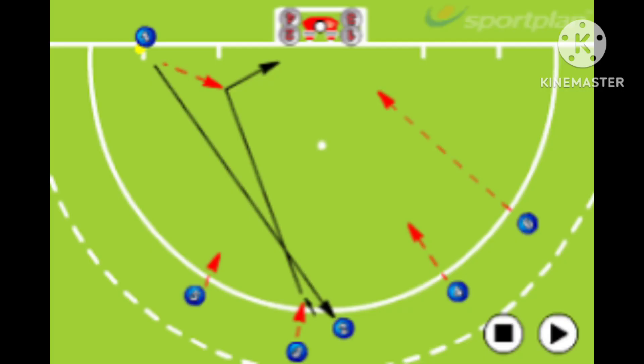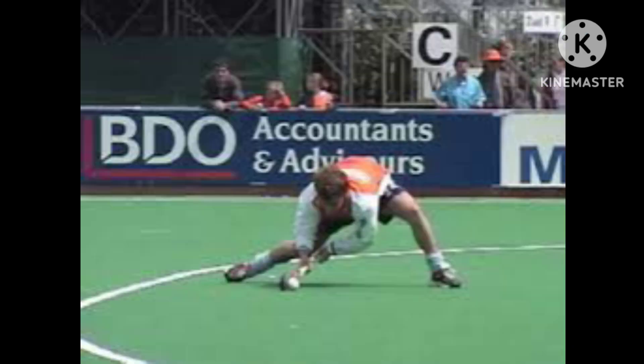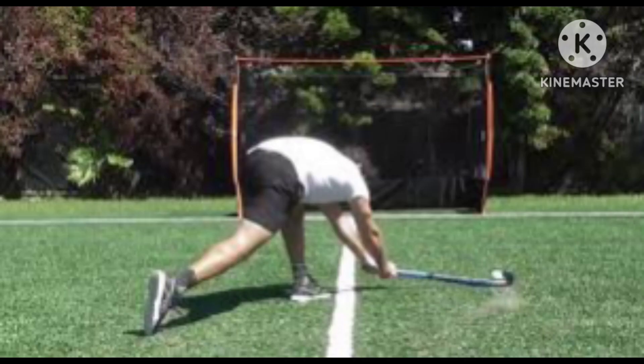To score, a player has to stop the ball just outside the circle while a teammate tries to either flick or shoot to score a goal.